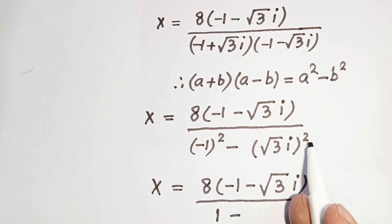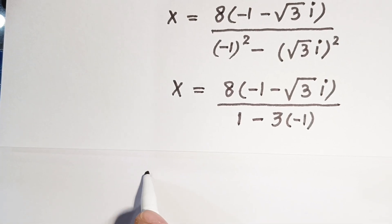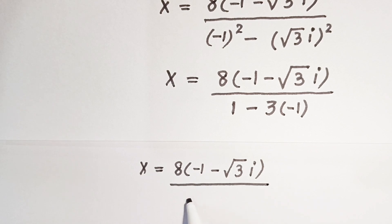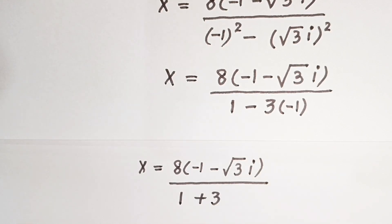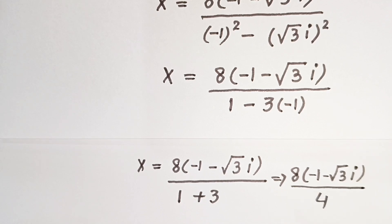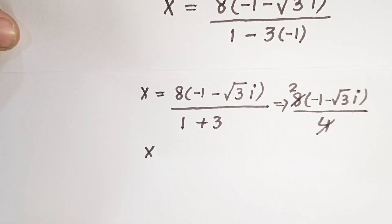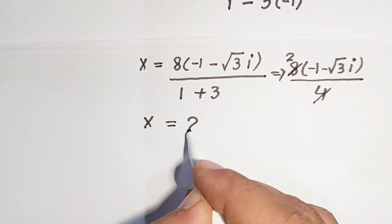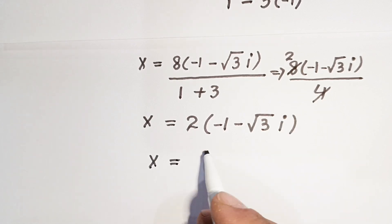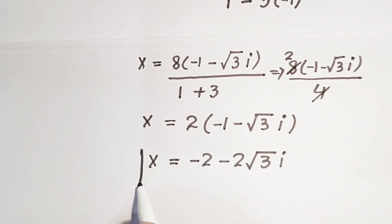Since square root of 3 squared is 3 and i squared equals minus 1, the denominator is 1 minus 3 times minus 1, which equals 1 plus 3 equals 4. So x equals 8 times minus 1 minus square root of 3 i, all over 4. Simplifying, 8 over 4 equals 2, giving x2 equals minus 2 minus 2 times square root of 3 i.